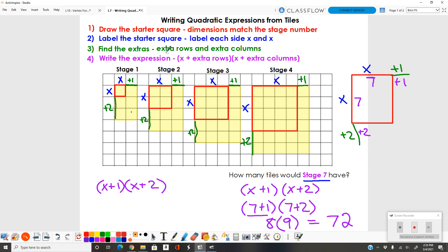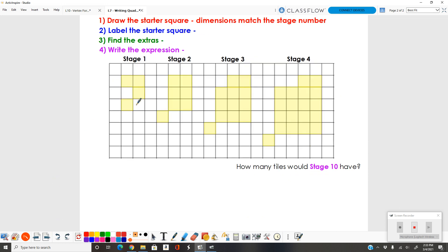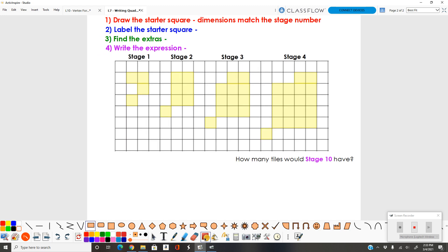This is the process you're going to use any time you have a full rectangle or a full square. The process is a little different if you're missing pieces, if it's not a full shape. You'll notice the steps look the same: starter square, label the starter square, find the extras, write the expression. There's just a little bit of a difference.